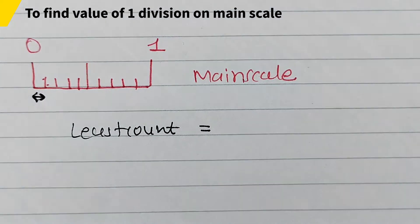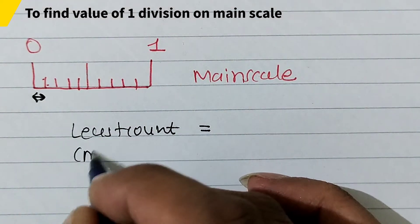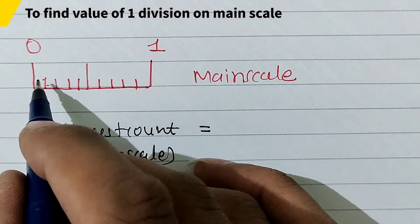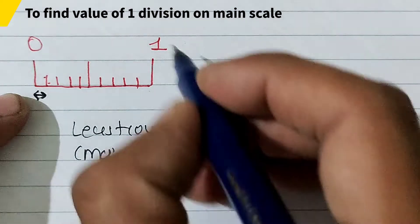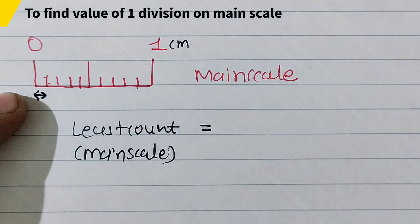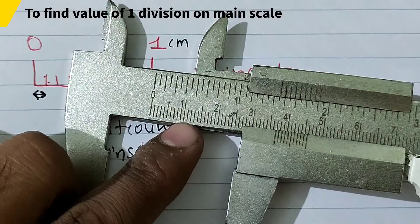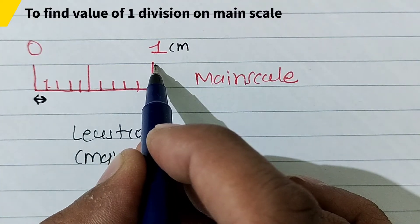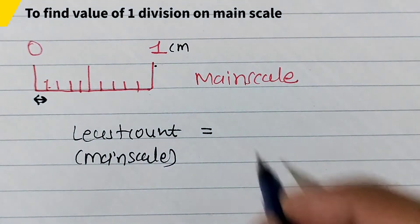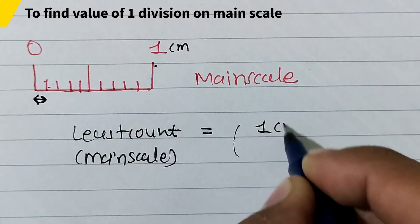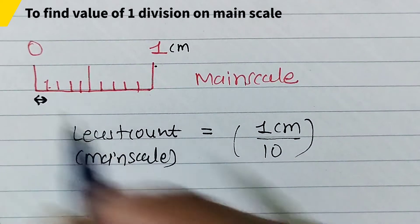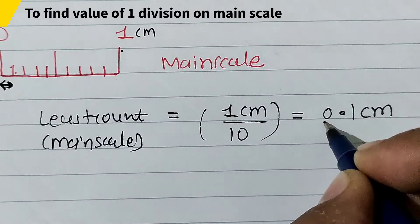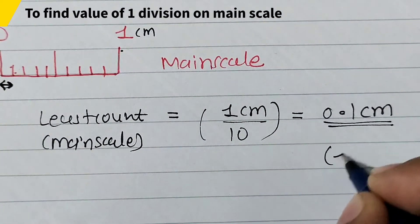The least count of the main scale: the total graduation is 1 centimeter — this is given in centimeters, from 0 to 1 centimeter. So the total value is 1 centimeter, which is divided into 10 equal parts. This gives 1 centimeter divided by 10, which equals 0.1 centimeter, or we can also say 1 mm.